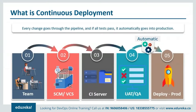Continuous deployment is different from continuous delivery. Continuous deployment means that every change goes through the pipeline, and if it passes all the tests it is automatically deployed onto the production servers — there is no requirement for manual approval. Any change the dev team makes is directly deployed onto the production servers. With this approach, the quality of the software release completely depends on the quality of the test suite, as everything is automated with no requirement for any manual release approval.